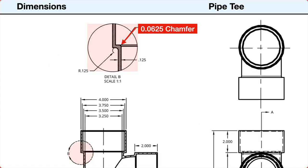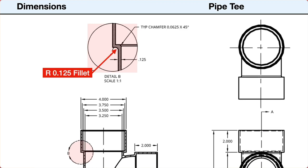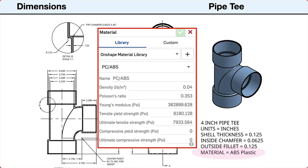The pipe transition follows an arc that has a radius of 2.75 inches. All inner edges have a chamfer of 1/16th or 0.0625 inches. The outside junction of the pipe and the flange has a fillet of 1/8th or 0.125 inches. The material from the Onshape material library is PC/ABS plastic with a density of 0.04.